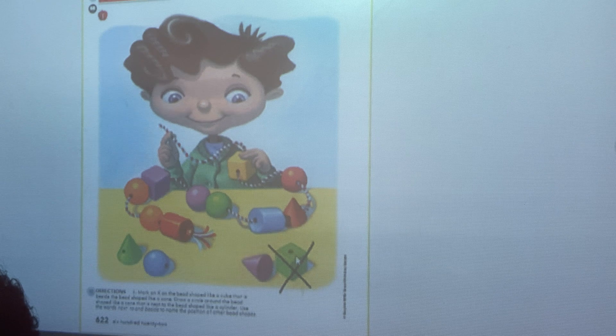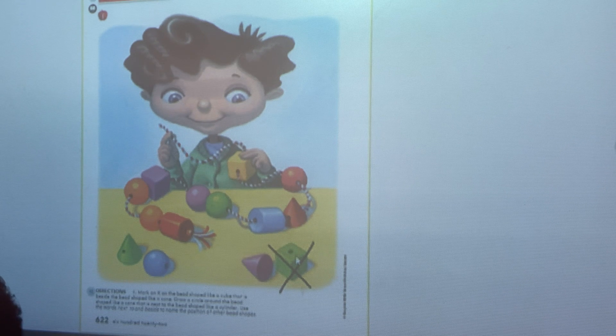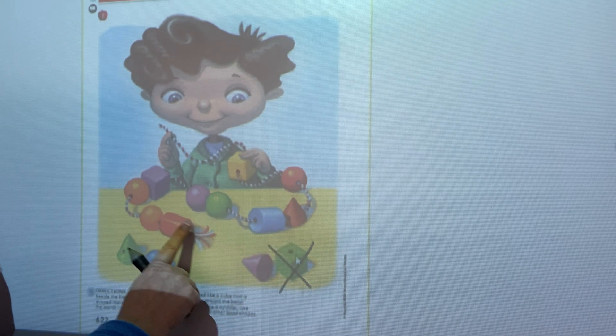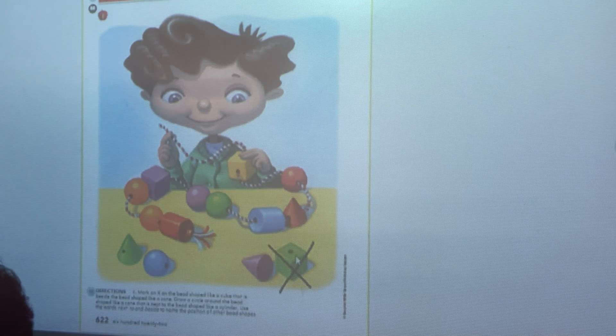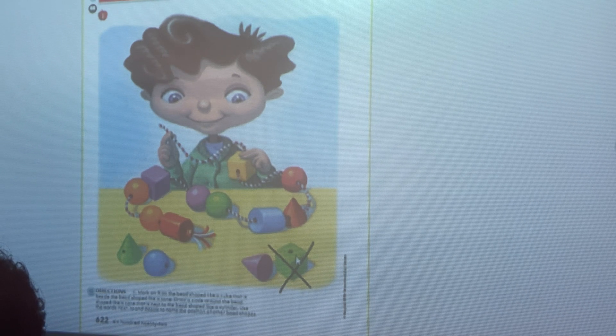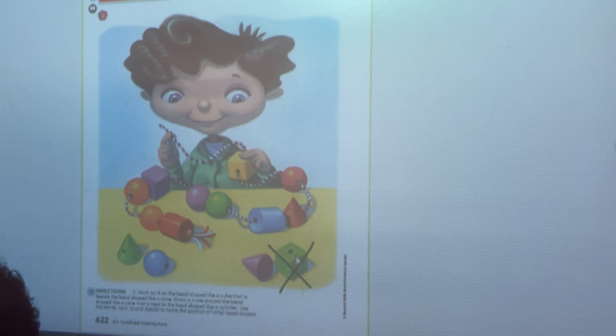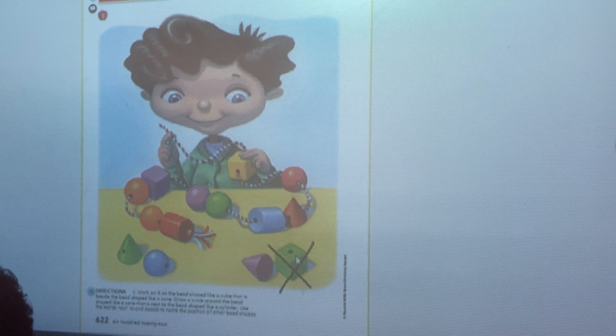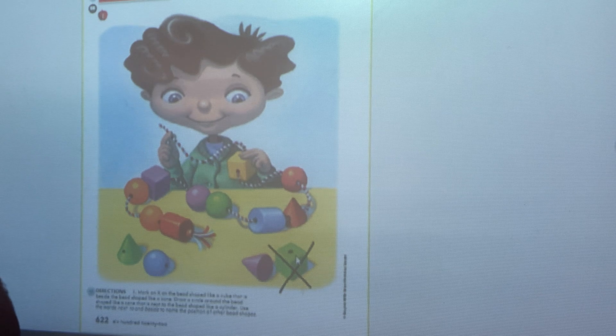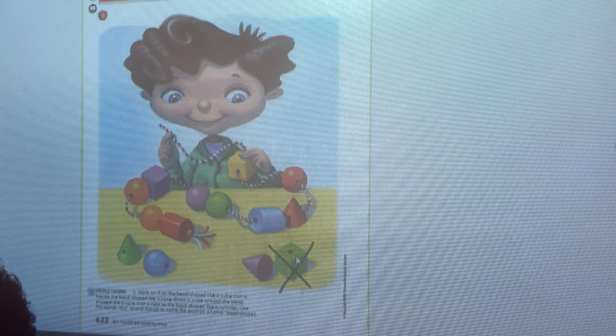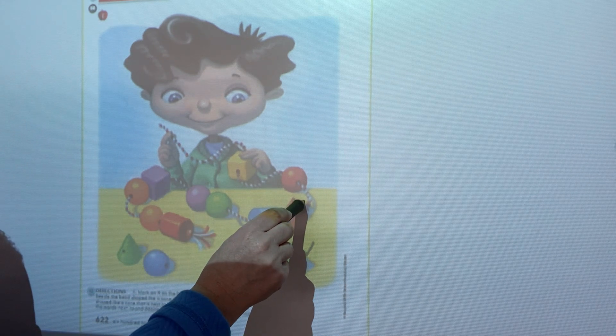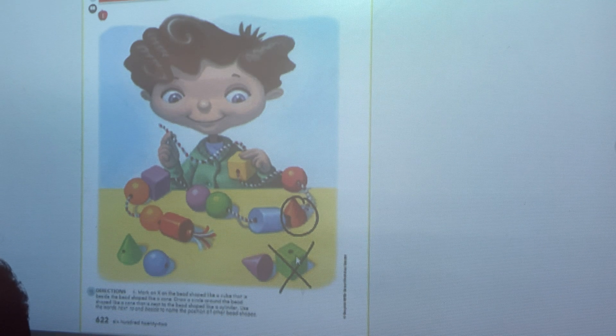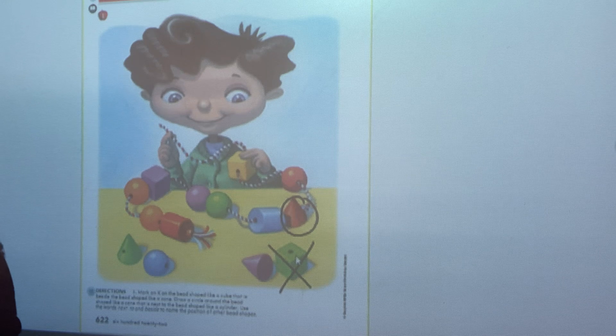Now I want you to draw a circle around the bead that is shaped like a cone. How many cones do we have? I see this red cone and this purple cone and this green cone. So there are three cones. I want you to draw a circle around the bead shaped like a cone that is next to the bead shaped like a cylinder. Where is the cone that is next to the cylinder? It would be right here. It is next to a cylinder. Great job. Try to review and go over those shapes with someone.